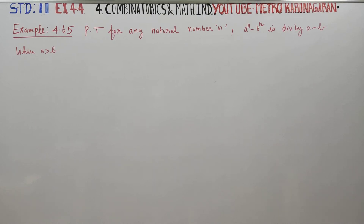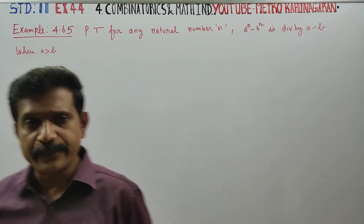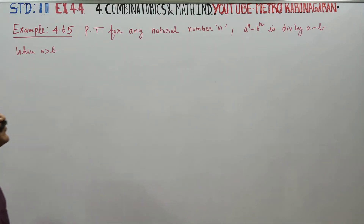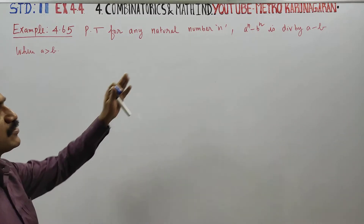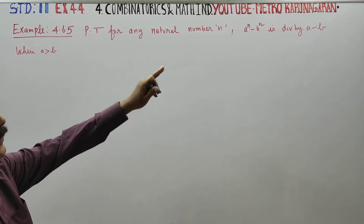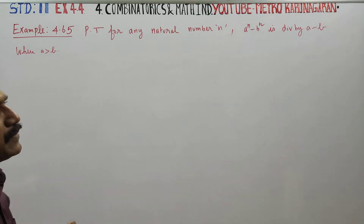Dear Leven Standard students, I am Metro Karnagaran. In combinatorics and mathematical induction, example 4.65: you have to prove that for any natural number n, a power n minus b power n is divisible by a minus b.